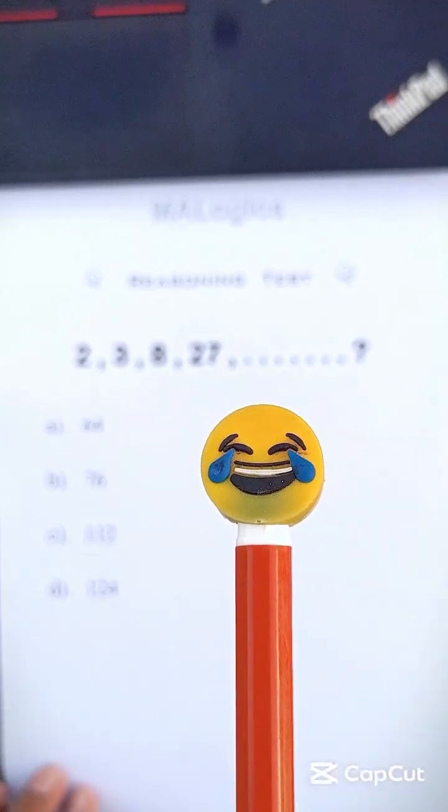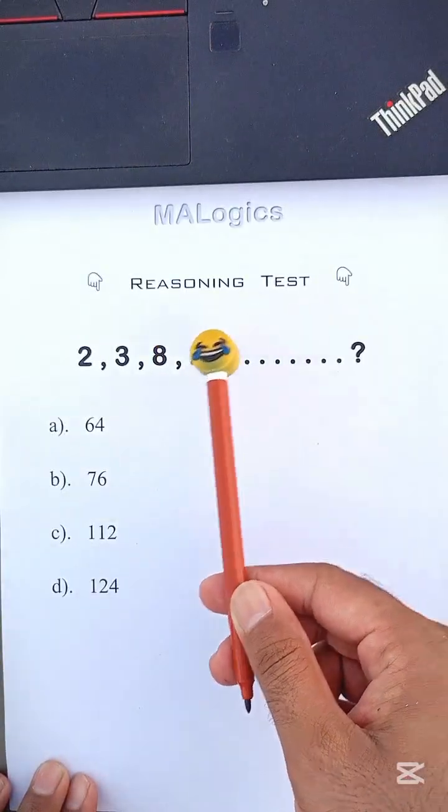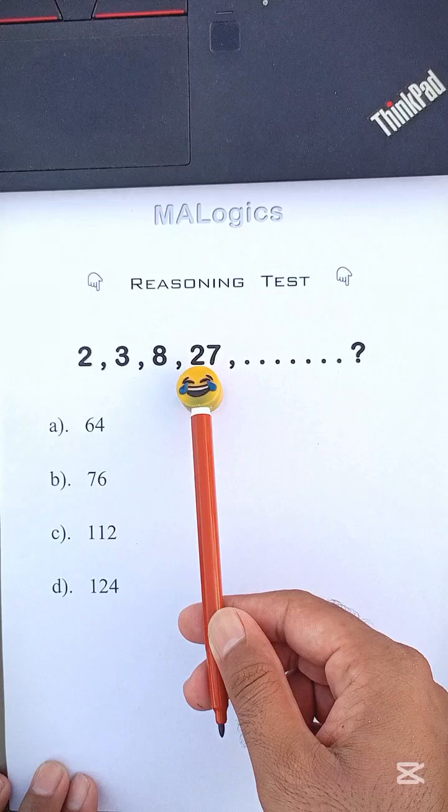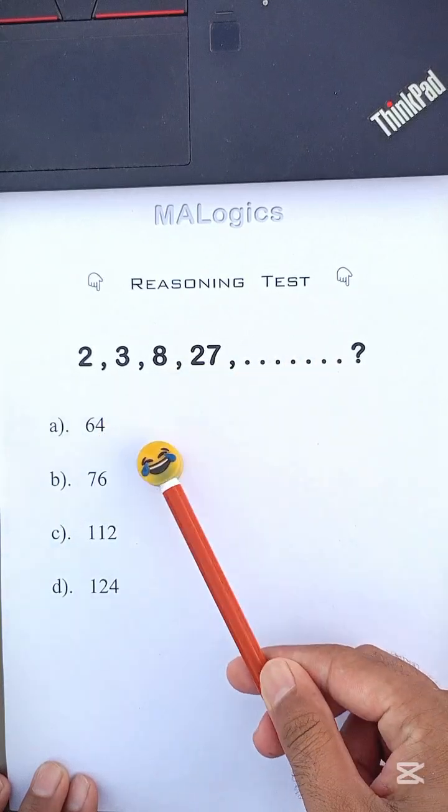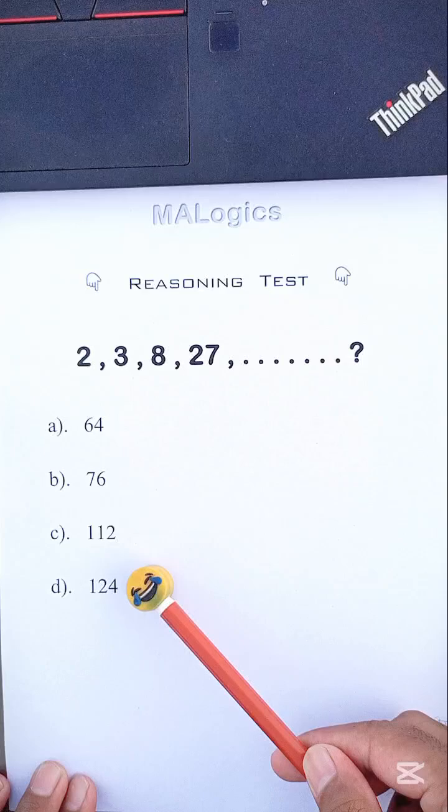Let's decode a reasoning test which you often see in your exams. Here, 2, 3, 8, 27. Can anyone guess the next number of this sequence? What actually comes after 27 from the options below?